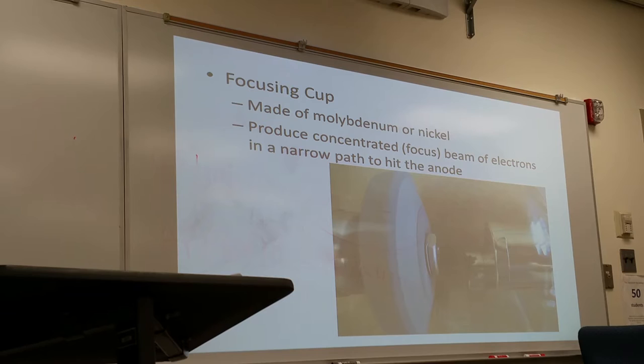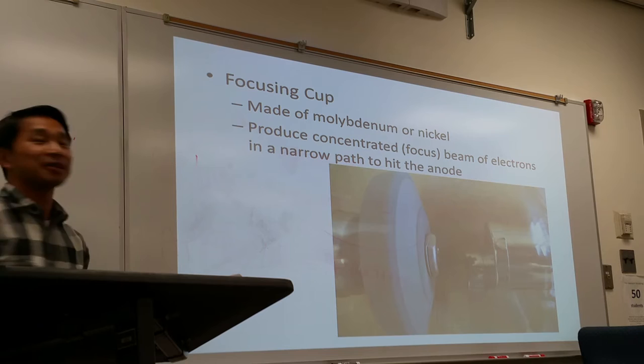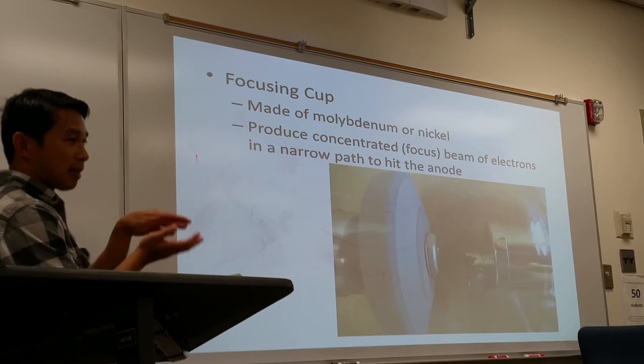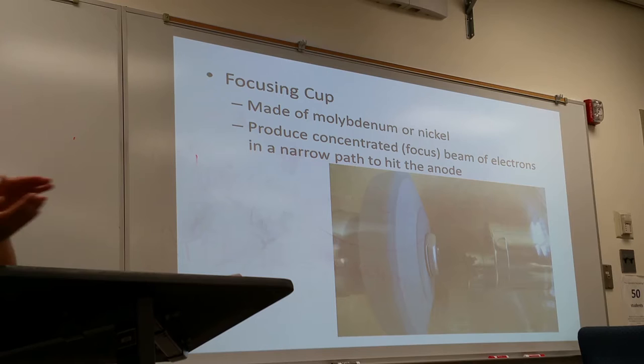The other part of the cathode side is the focusing cup, generally made of molybdenum or nickel. The purpose of the focusing cup is to concentrate the electrons that are about to escape, directing them toward the anode side through a very narrow path.